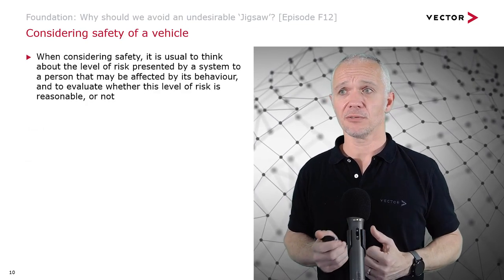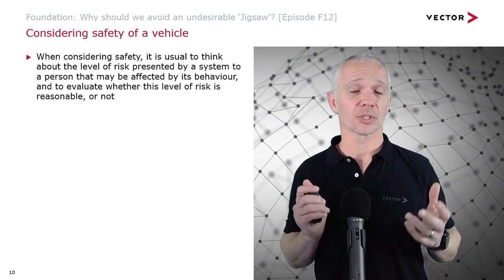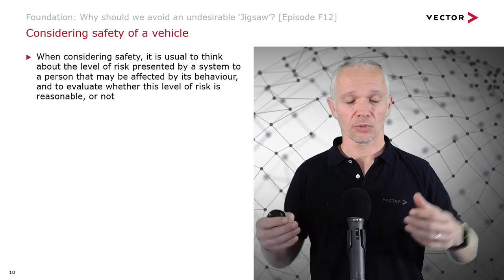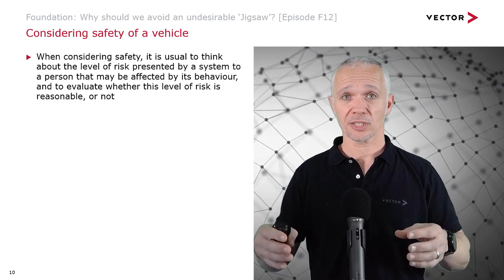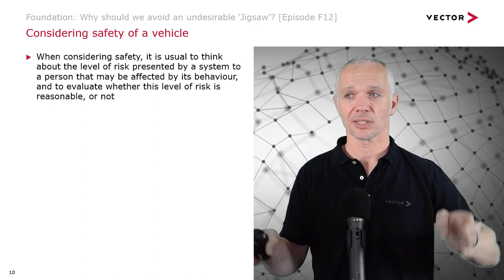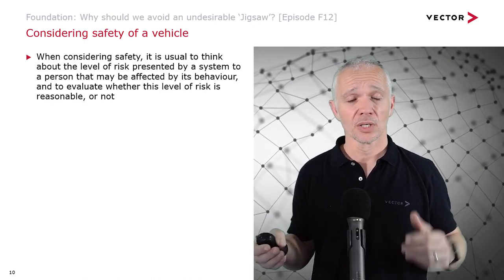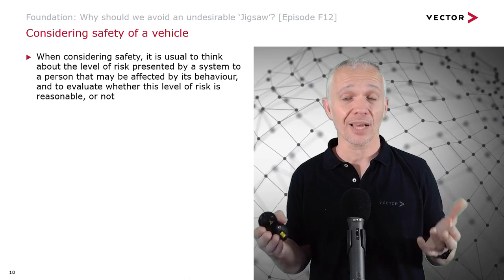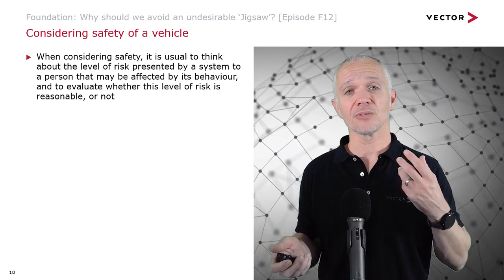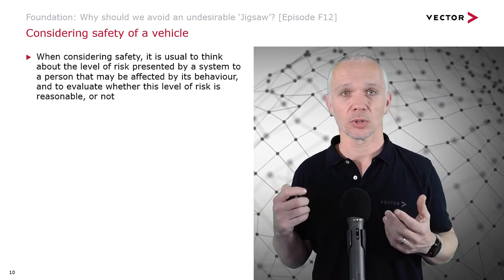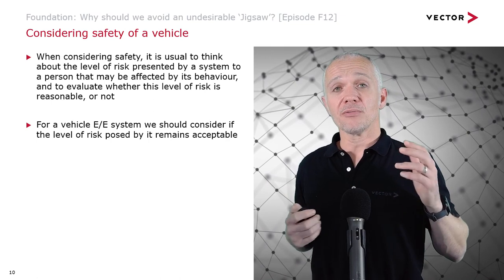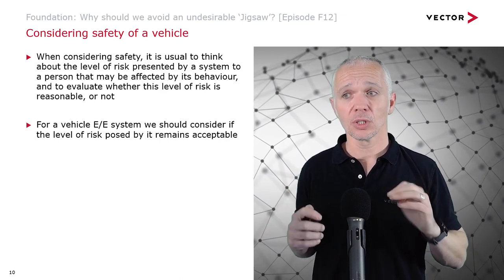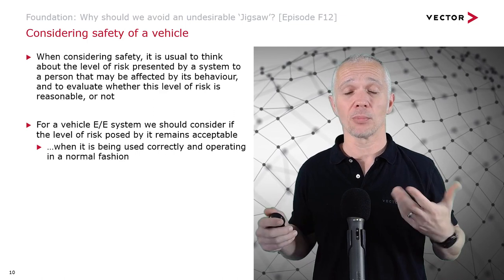When we consider safety, it's quite usual to think about the level of risk presented by a system to a person that may be affected by its behaviour — road vehicle occupants such as drivers and passengers, people around the vehicle such as pedestrians, cyclists, motorcyclists, other drivers, people in workshops, and people building cars in factories. We should evaluate whether that level of risk is reasonable, and consider whether it remains acceptable when the system is being used correctly and operating in a normal fashion.